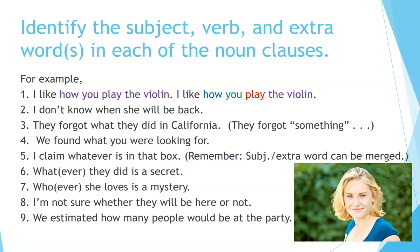Identify the subject, verb, and extra word or words in each of the noun clauses. We'll do the first one together. 'I like how you play the violin.' 'How you play the violin' — that whole thing — is the noun clause. The extra word is 'how' (in blue). The subject is 'you' (in green). The verb is 'play' (in red). 'The violin' is just the object — more information at the end of the noun clause. Number two: 'I don't know when she will be back.' You try it using whatever method you'd like. 'When she will be back' — take a moment to do these exercises.